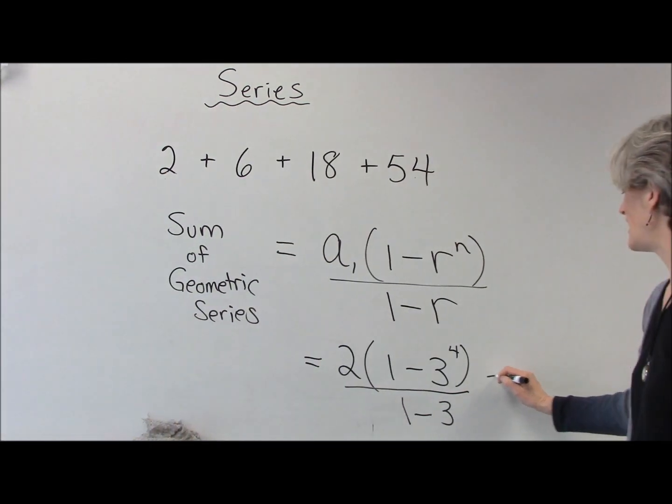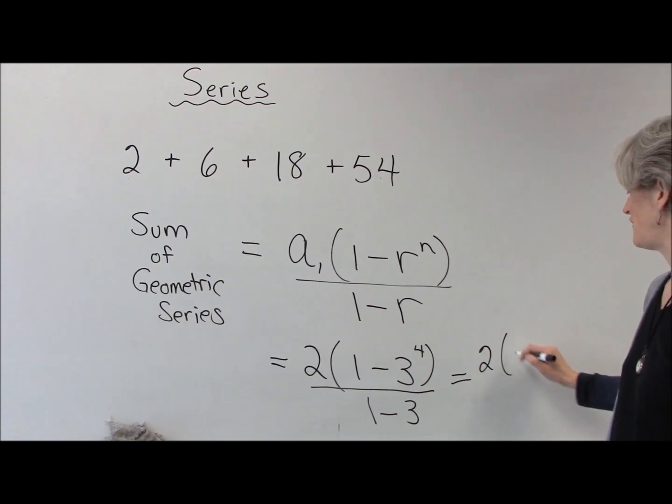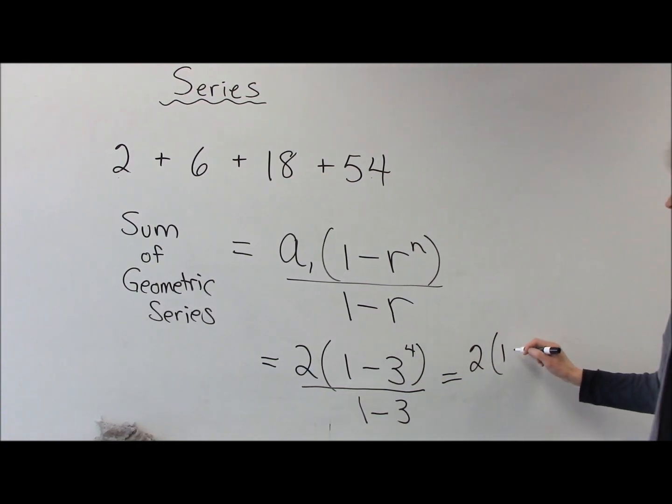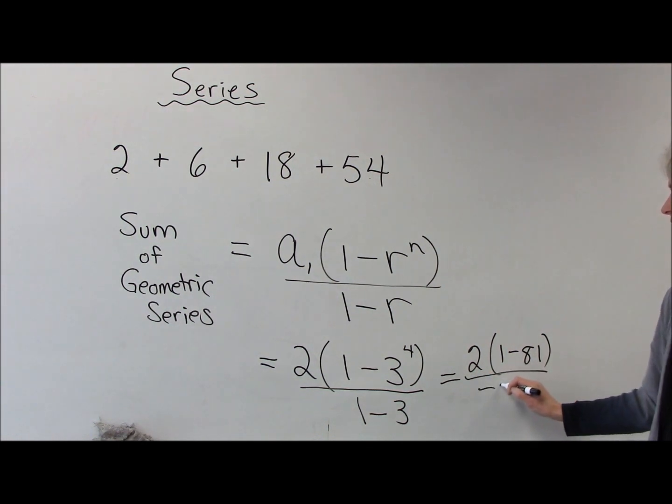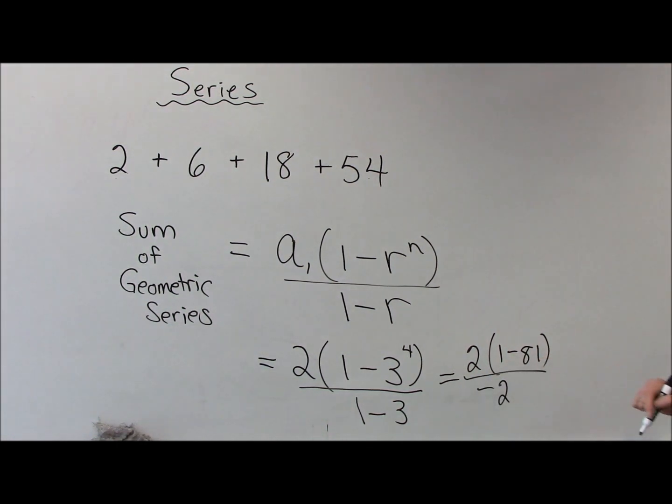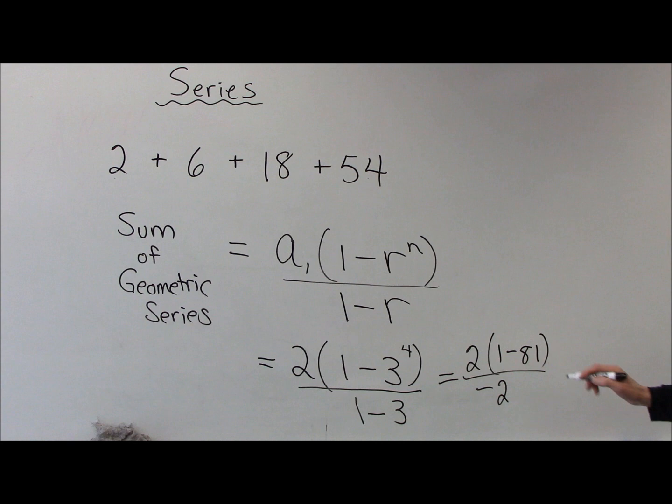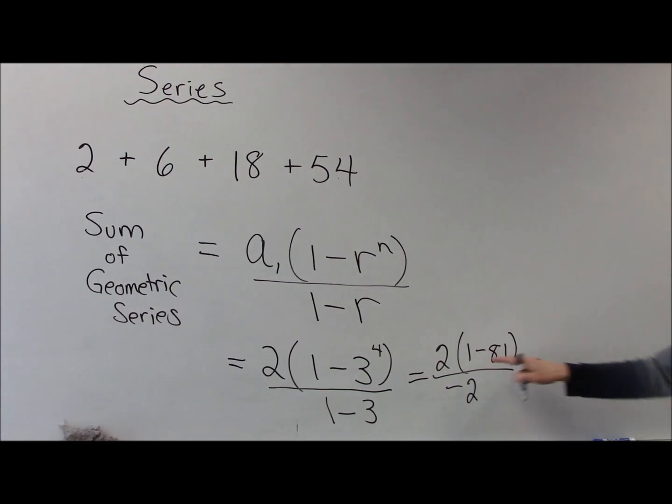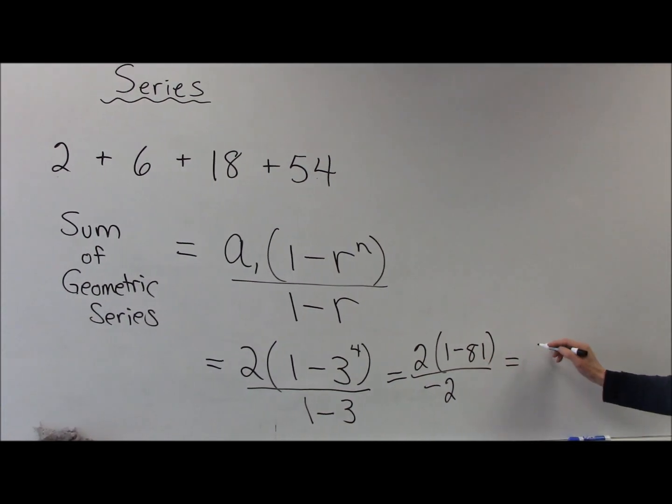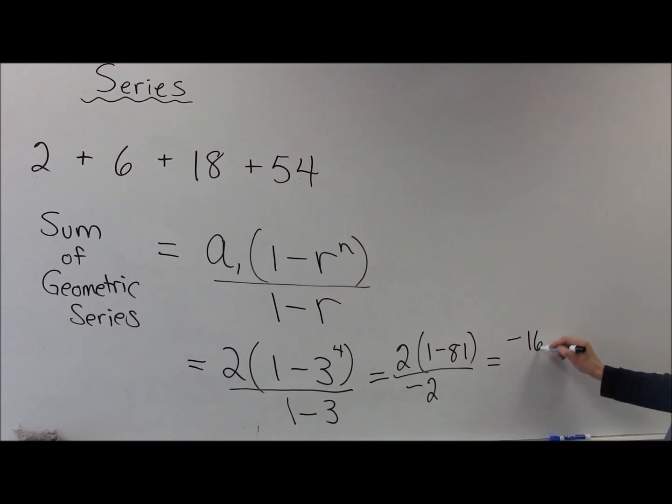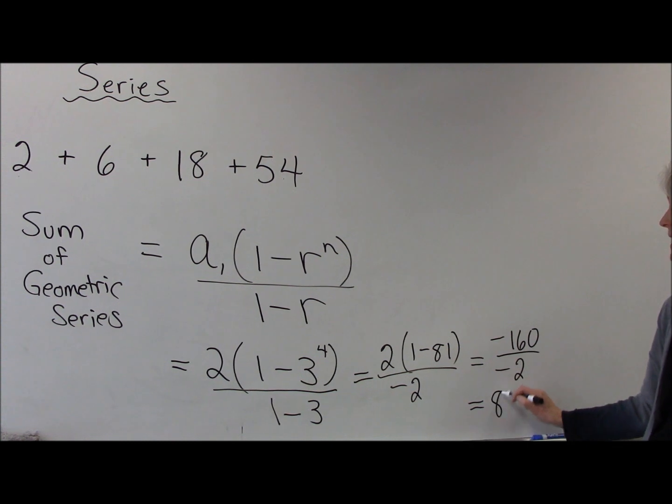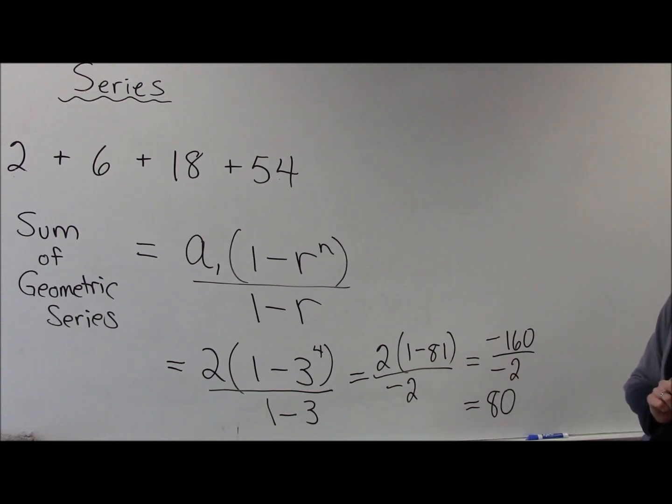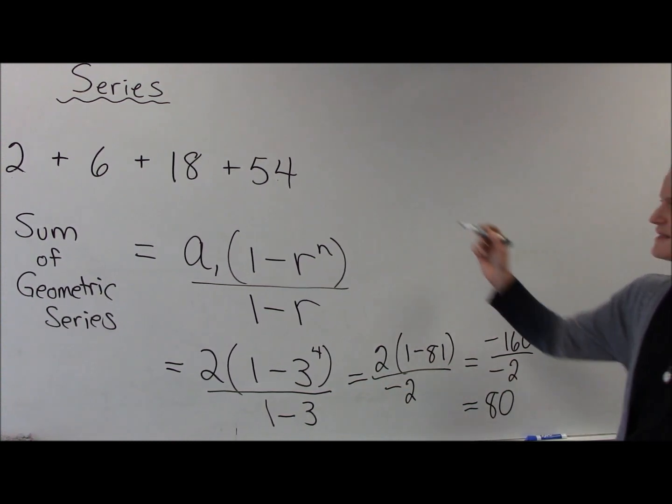Okay, so you can obviously get your calculator out if you need that. Let's just kind of figure this out. So 3 to the fourth, that's 81. 1 minus 81 is negative 80. Negative 80 times 2 is negative 160, divided by negative 2. That gives me a sum of 80. Should we check that?